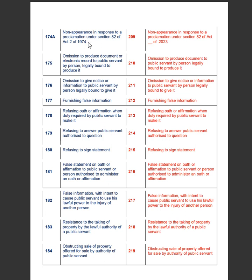Section 174A of the IPC deals with non-appearance in response to a proclamation under Section 82 of the Act 2 of 1974, that is CrPC, whereas Section 209 of the BNS deals with non-appearance in response to a proclamation under Section 82 of the BNSS of 2023. Section 175 of the IPC deals with omission to produce document or electronic record to public servant by person legally bound to produce it. Section 176 of the IPC deals with omission to give notice or information to public servant by person legally bound to give it.